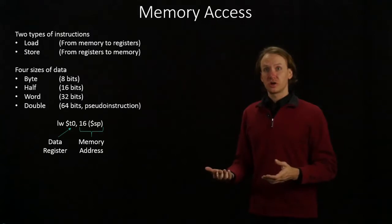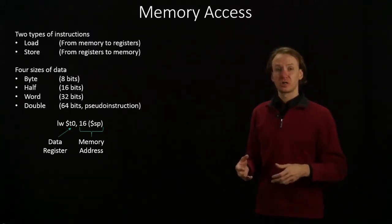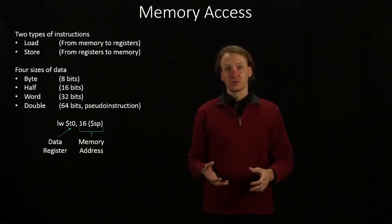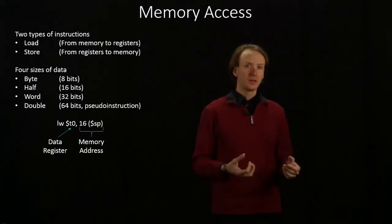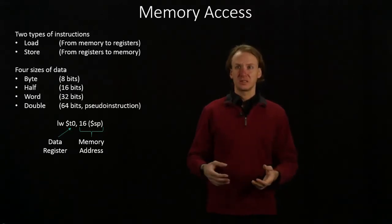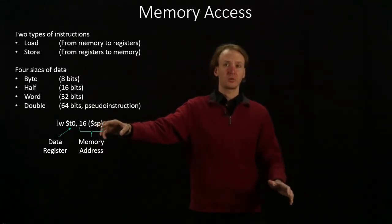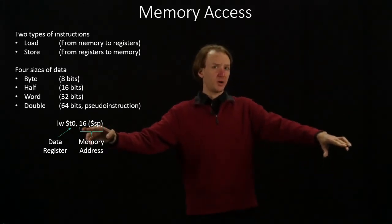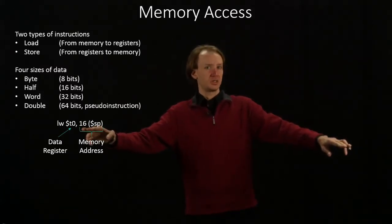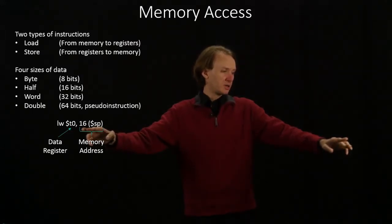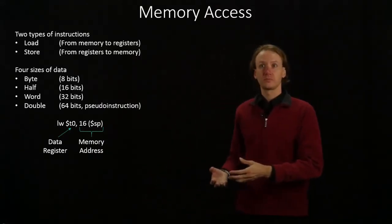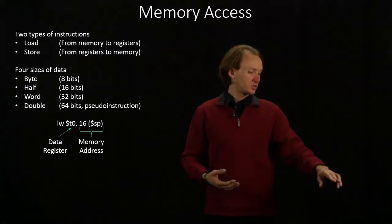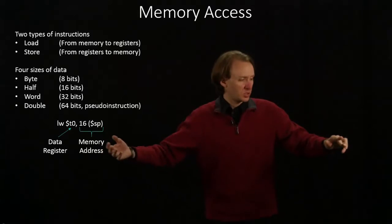Whether you're doing a load or a store instruction, they'll both have the same format for the parameters. The first parameter is the register that we're working with — the one we're going to copy data to or from. The rest of the arguments tell us where in memory our data is or should be, and to do this we use a base and an offset. Our base is contained in some register — in this case the stack pointer. With an offset of 16, we go to wherever our stack pointer is and then go up 16 more bytes. That's where we'll find the data to put in T0, grabbing four bytes starting there. A store word instruction would take data out of T0 and copy it into the region from stack pointer plus 16 to stack pointer plus 19.